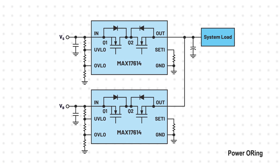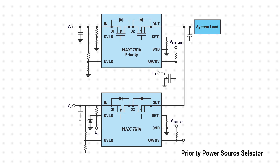The flexibility of the UVLO and OVLO enables effective priority power source selection, where the primary power source's operating range overlaps with the backup power source's voltage, such as is common with a backup battery. In these applications, the MAX17614 can prevent toggling between sources or sub-optimal battery charging.